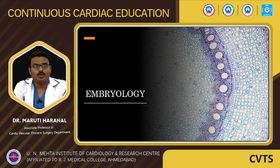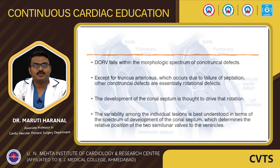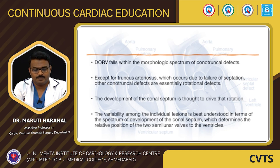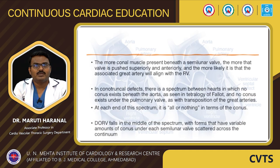DORV falls within the morphological spectrum of conotruncal defects. Except for truncus arteriosus, which occurs due to failure of septation, other conotruncal defects are essentially rotational defects. The development of the conal septum is thought to drive that rotation. Variability among individual lesions is best understood in terms of the spectrum of development of the conal septum, which determines the relative position of the two semilunar valves to the ventricles. The more conal muscle present beneath a semilunar valve, the more that valve is pushed superiorly and anteriorly, and the more likely the associated great artery will align with the right ventricle.